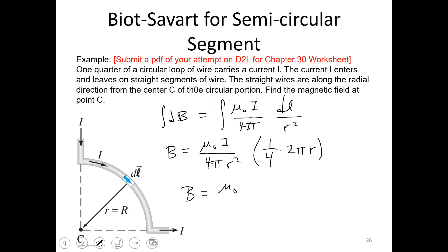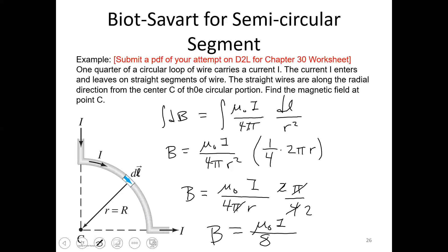Simplifying, our answer is mu-zero I over 8R. You can apply this same logic to any portion of a circle — for example, a half circle would use a very similar integral over DL. Your textbook has an early example on the magnetic field due to a curved wire segment, which is closely related but slightly different from this problem.